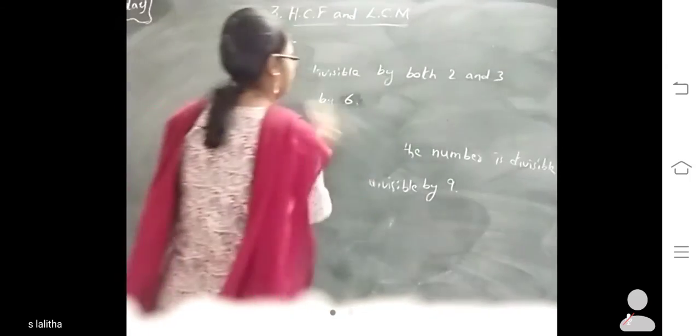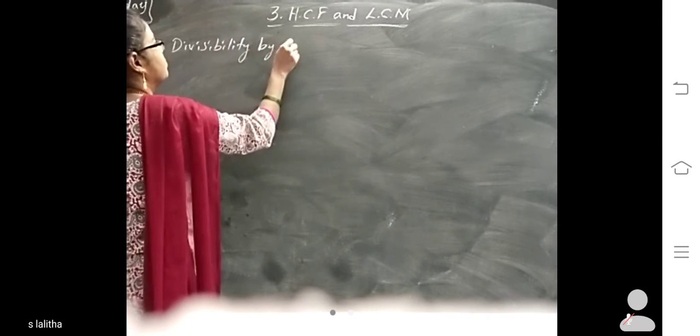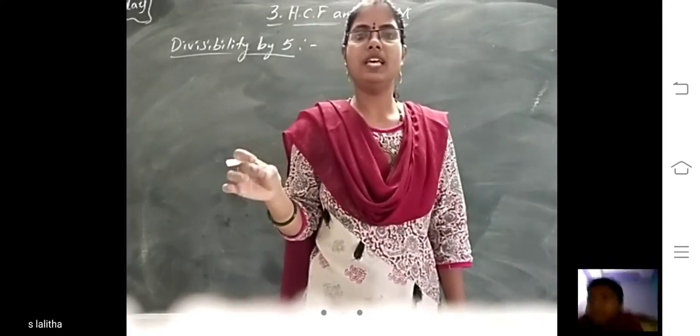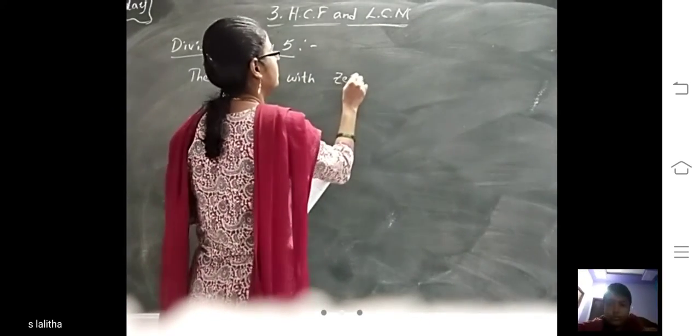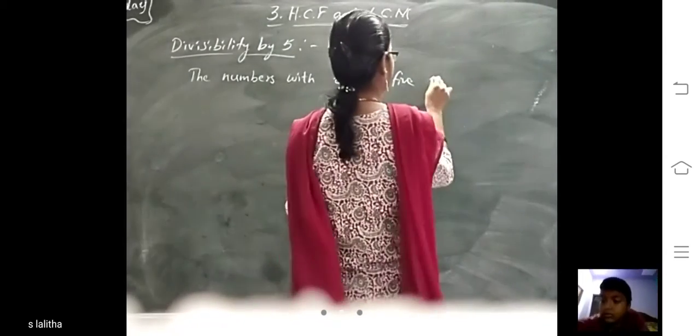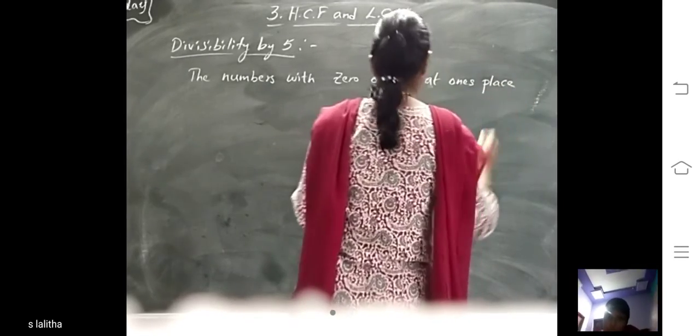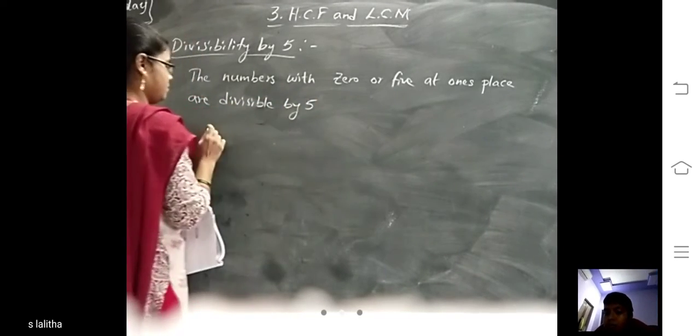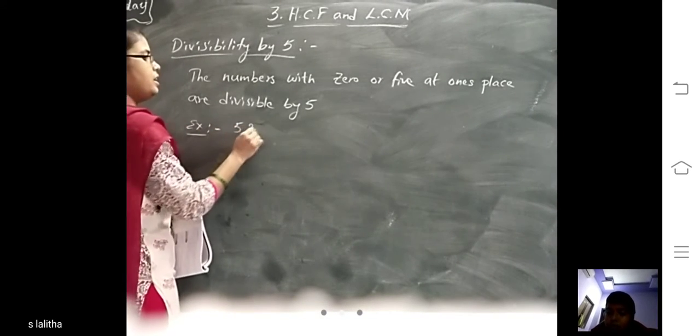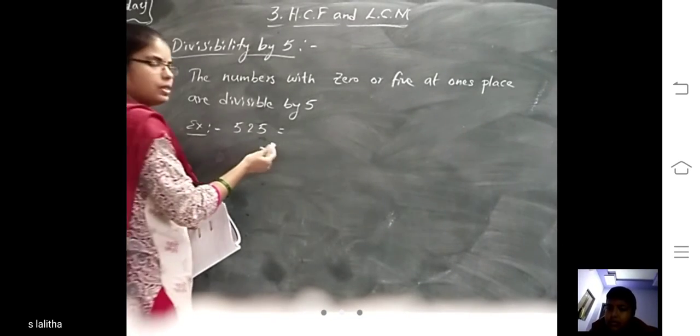Now, divisibility by 5. How do we say whether it is divisible by 5 or not? If in the given number the ones place is 0 or 5, it is divisible by 5. The numbers where the ones place is 0 or 5 are divisible by 5. For example, take 25. In the ones place is 5, so it is divisible by 5. Okay?